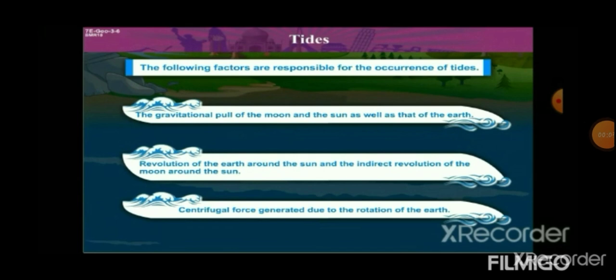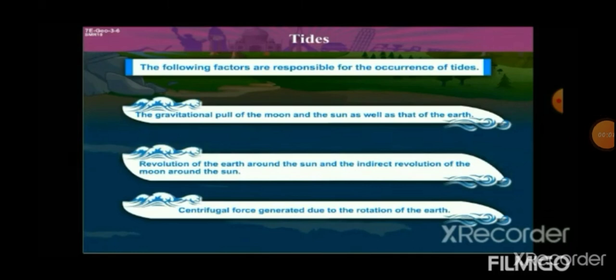Let us understand the factors responsible for the occurrence of tides. The first and most important is the gravitational pull — not only by the moon, but also the sun and the Earth. All three celestial bodies act together to cause tides. The second is the revolution of the Earth around the sun and the indirect revolution of the moon around the sun. The third is the centrifugal force generated due to the rotation of the Earth.